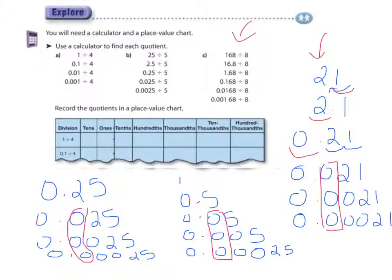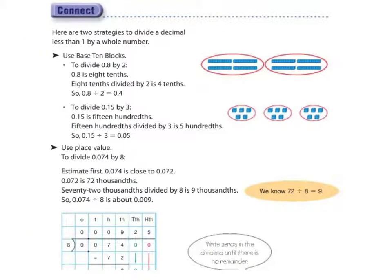So, as you can see, when you divide with a smaller number, a number below 0, you end up adding a 0 in here each time to your answer as it changes. Alright, so let's take a look at our connect section.